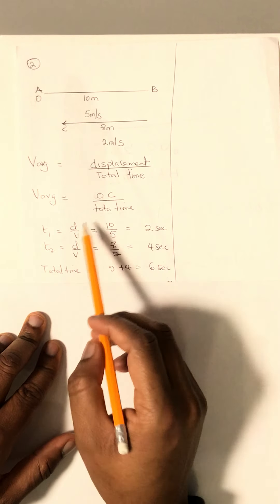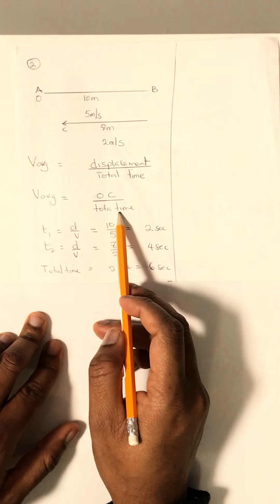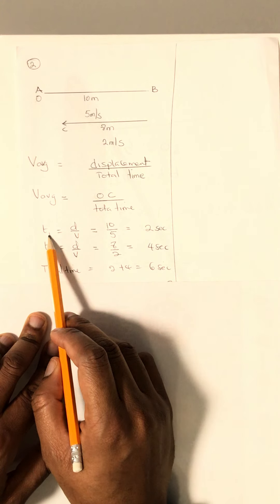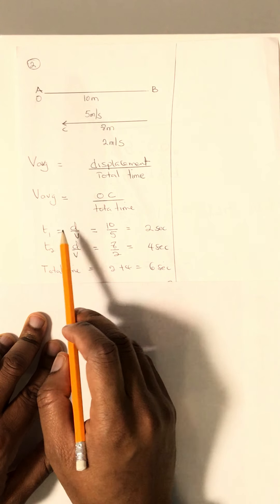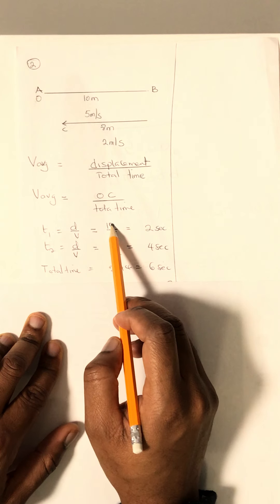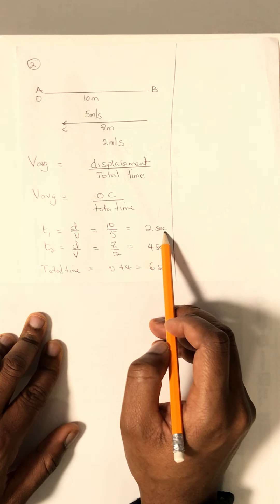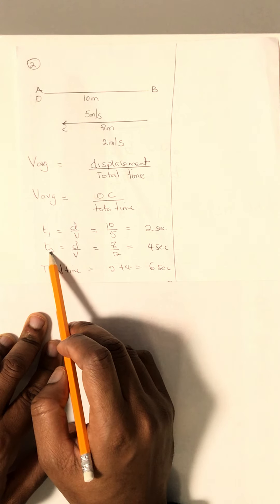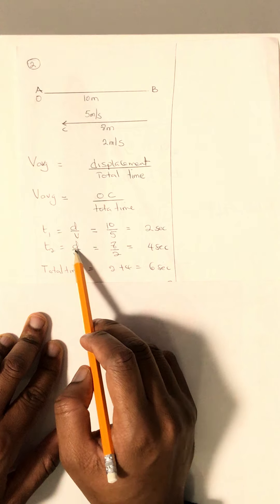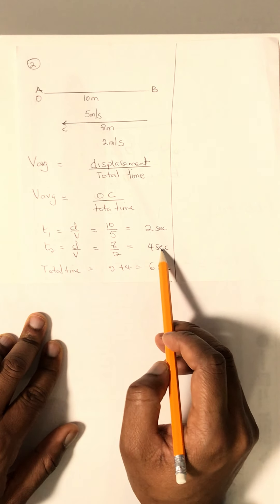First of all, we need to calculate the total time. For the first journey, time equals distance over velocity, which equals 10 over 5 meters per second, giving us 2 seconds. For the second journey backward, time equals distance over velocity, which equals 8 over 2, giving us 4 seconds.